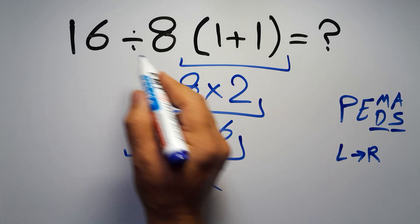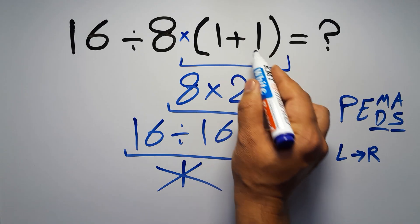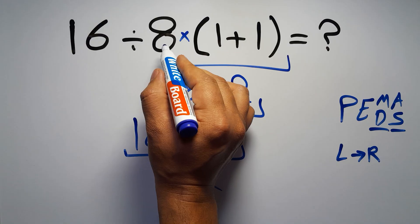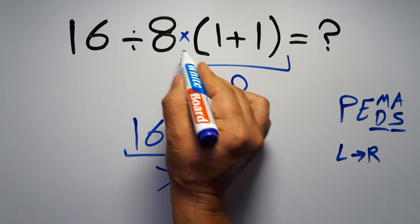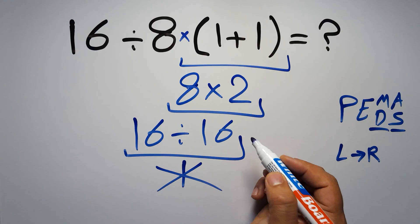In this expression, we have one division, one multiplication, and one parentheses. Inside this parentheses, we have one addition. Here we have a multiplication, because in mathematics, when a number is placed next to parentheses, it means multiplication, and we usually don't write the multiplication sign for brevity.